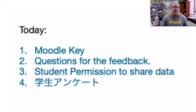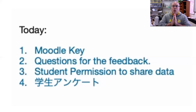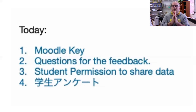Number three, student permission to share data. Tracy Sensei, Kate Sensei, and I will be writing a report for research, and we want to use your information from the on-cat and the feedback. We want to make this class better, and to share our findings with other people. We want your permission. We want to use your ideas that you give us on the on-cat and the feedback. Are we going to show your face to other people? No. Are we going to say your name to other people? No. Just take the information and share that with other people. So please give us your permission.